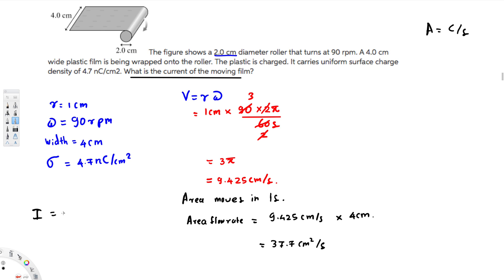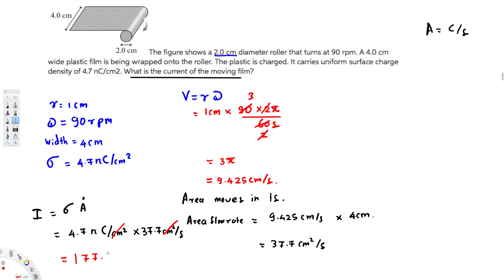So the current I equals charge density times area flow rate. That's 4.7 nanocoulombs per centimeter square times 37.7 centimeters squared per second. The centimeter squared units cancel, giving us the answer in nanocoulombs per second. Multiplying gives us 177.79.